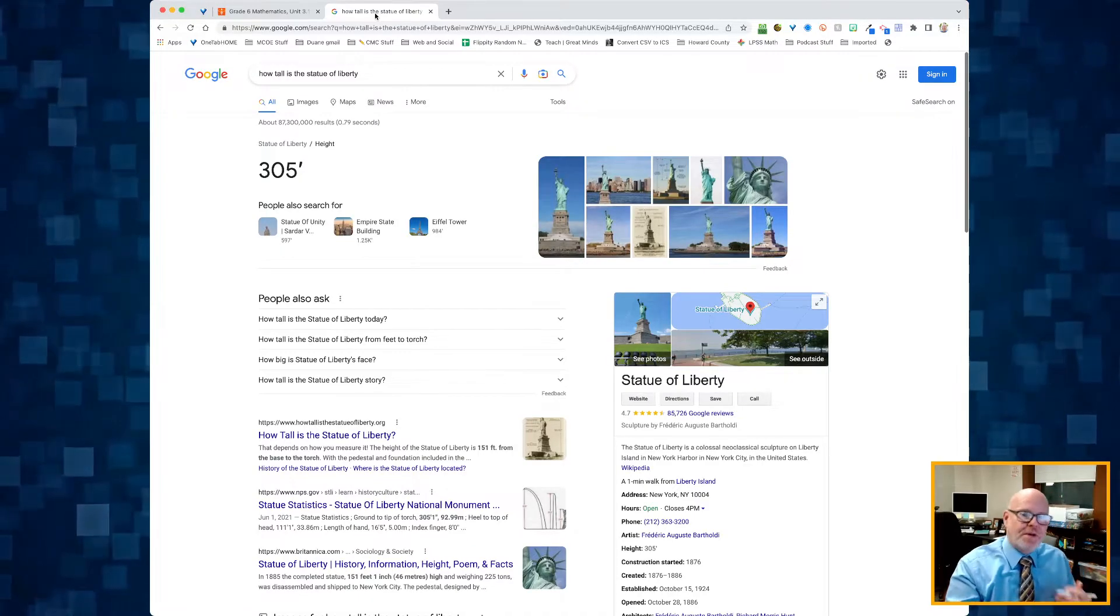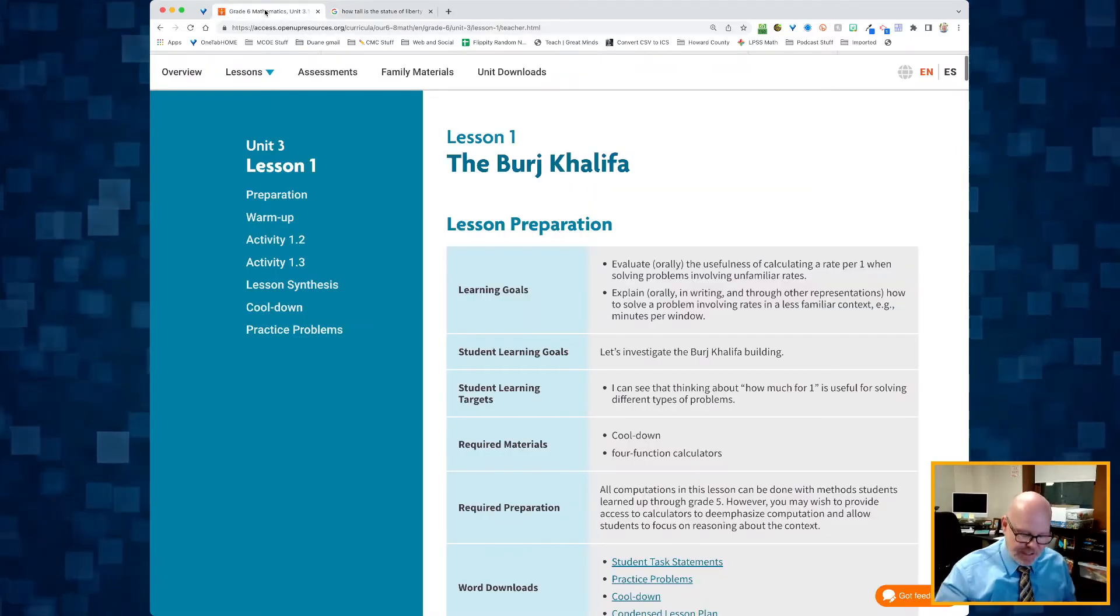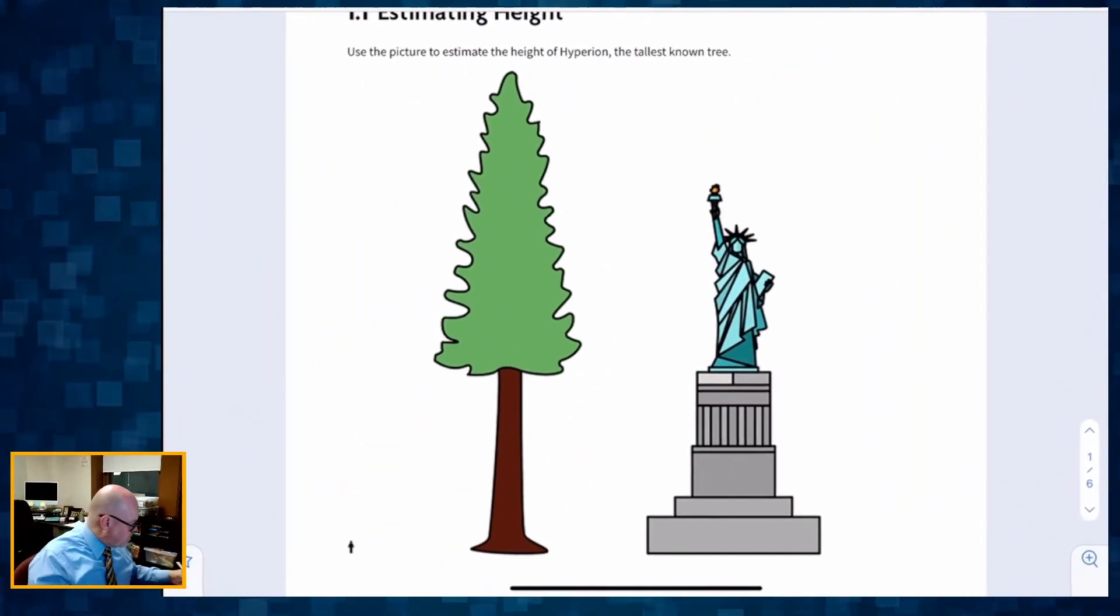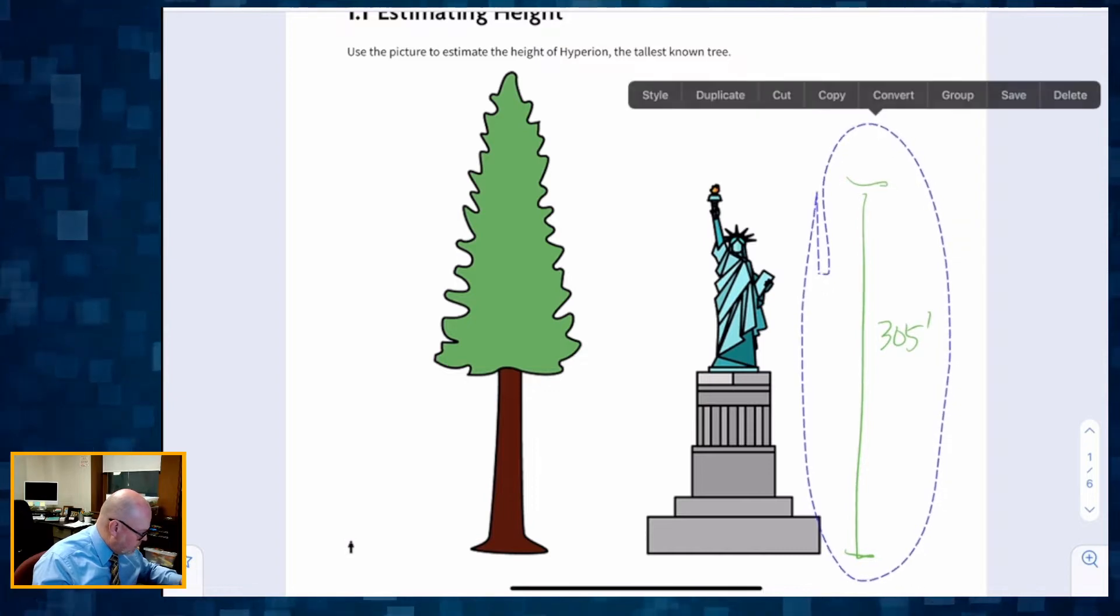I looked up how tall is the Statue of Liberty, and it's 305 feet. All right, so if the Statue of Liberty is 305 feet, then we want to know how tall is that Hyperion tree. There, that right there is 305 feet, and undo that part.